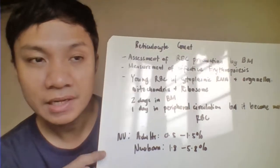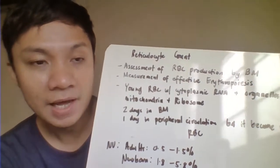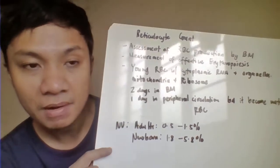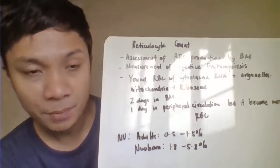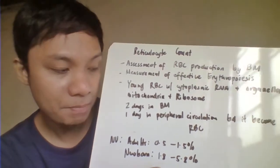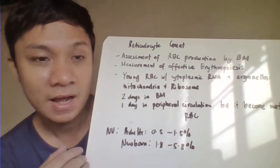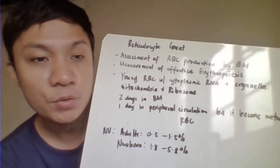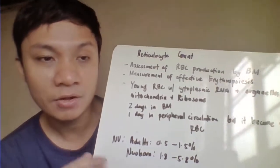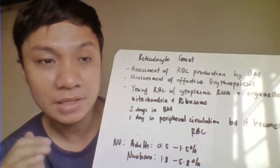Before becoming a mature RBC, the reticulocyte spends two days in the bone marrow and another one day in peripheral circulation. The normal reticulocyte count for adults is 0.5 to 1.5 percent. For newborns, it is much higher at 1.8 to 5.8 percent, because their bone marrow is still actively producing new RBCs, so expect infants to have a higher reticulocyte count compared to adults.